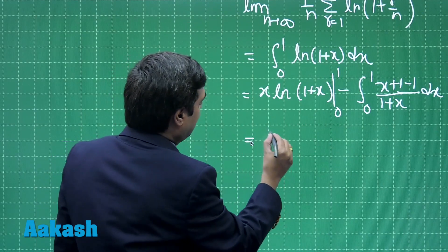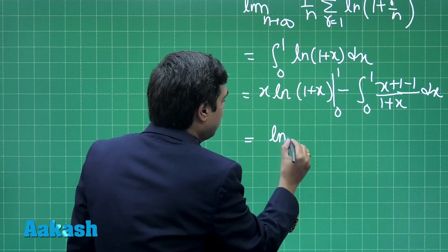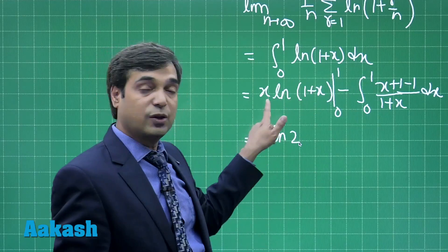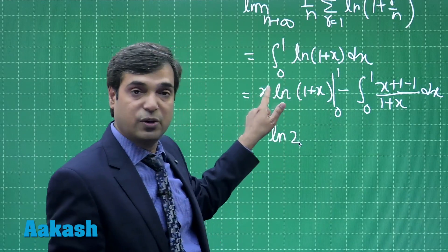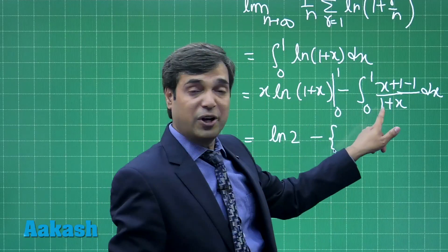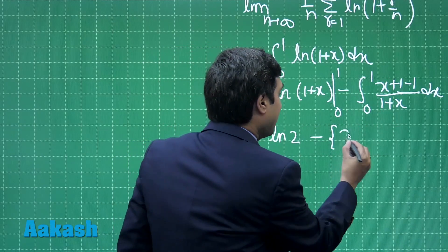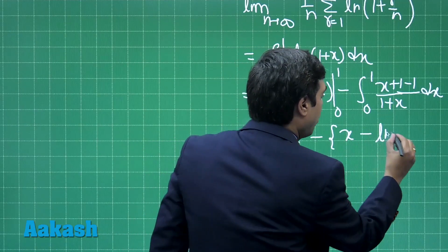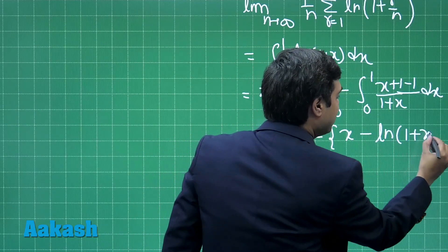This gives us log 2 on substituting x equals 1. When we put x equals 0 it becomes 0. Minus x plus 1 upon x plus 1, that is 1, it gives me x minus log 1 plus x.